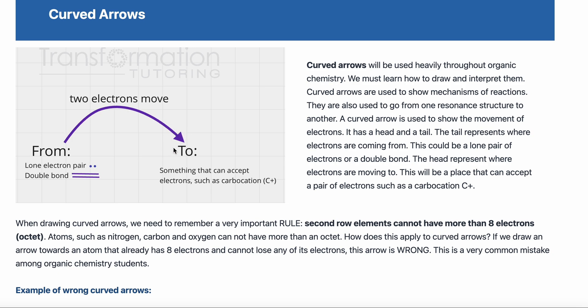The head of the arrow represents where these two electrons are moving to. They have to move to something that can accept electrons, such as a carbocation, or to something that can accept electrons and then maybe lose another pair of electrons. We will see that soon in our major patterns for resonance.